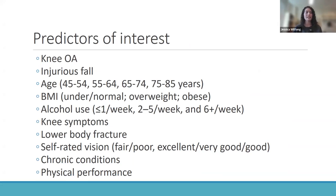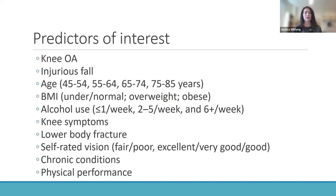We had many predictors of interest, all reported at baseline, to assess whether they predicted a fall at follow-up. These included: knee OA diagnosis, a baseline injurious fall, age, BMI, alcohol use, knee symptoms (knee pain on most days, pain while climbing down stairs or walking down slopes, or knee swelling in the past four weeks), lower body fracture (ever having a break or fracture of the hip, leg, knee, ankle, foot, or toes), self-rated vision, certain chronic conditions, and impaired physical performance.